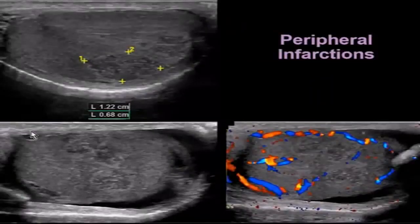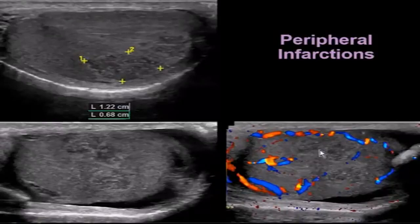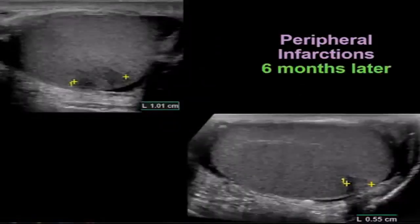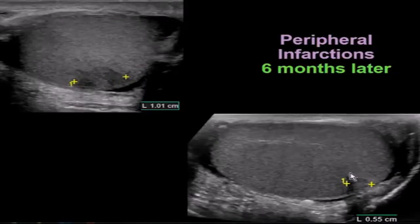This patient presented with pain and had peripheral lesions with no blood flow to them. The diagnosis was thought to represent an infarction, so these lesions were followed. Six months later, they're much smaller — resolving peripheral infarctions. We still see a residual hypoechoic lesion extending to the periphery, and in one view it is wedge-shaped.